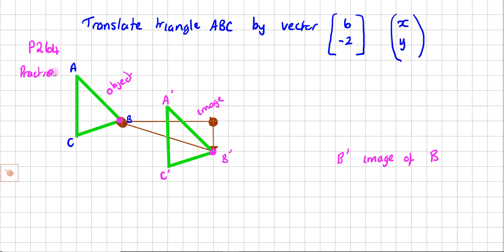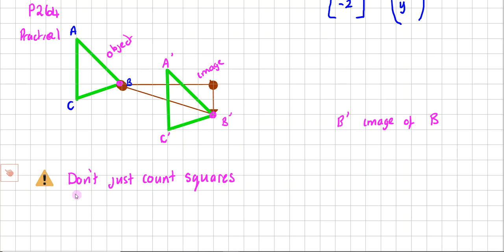Now, there is one thing I have to say. A little warning. Don't just count squares. Although all the questions that you've got at the moment, it's just about counting squares. But maybe sometimes the object is drawn with a set of axes rather than just on square paper. Why might that change it?